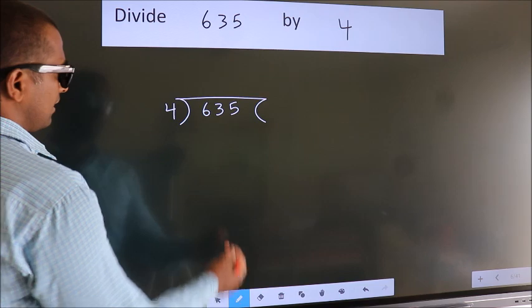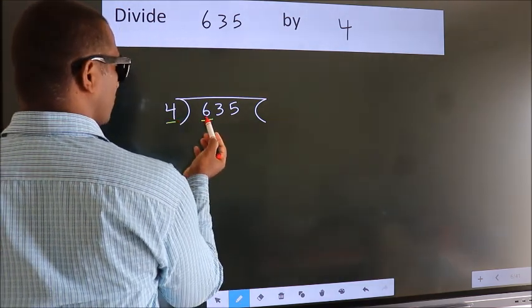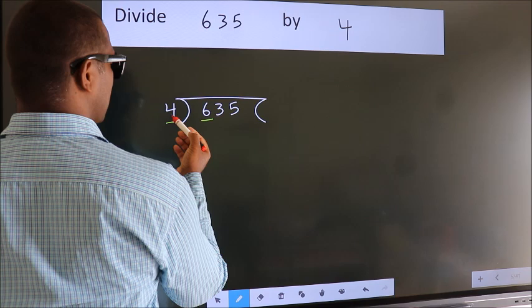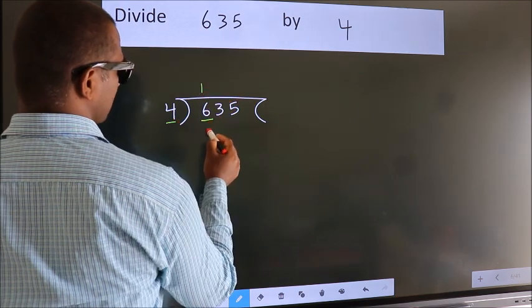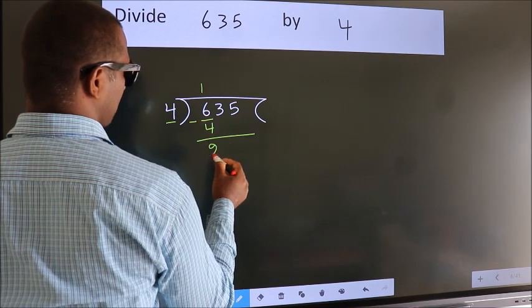Next, here we have 6, here 4. A number close to 6 in the 4 table is 4 once 4. Now we should subtract. We get 2.